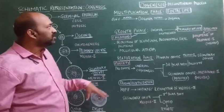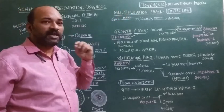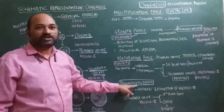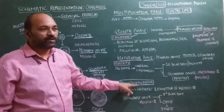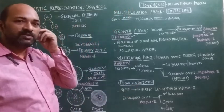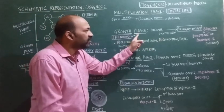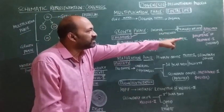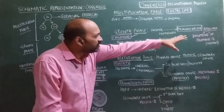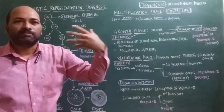Oogenesis starts during fetal life and ends after fertilization. It is called a discontinuous process because during the growth phase the primary oocyte is arrested, and this arrest extends for months to years — from childhood until the female reaches puberty.